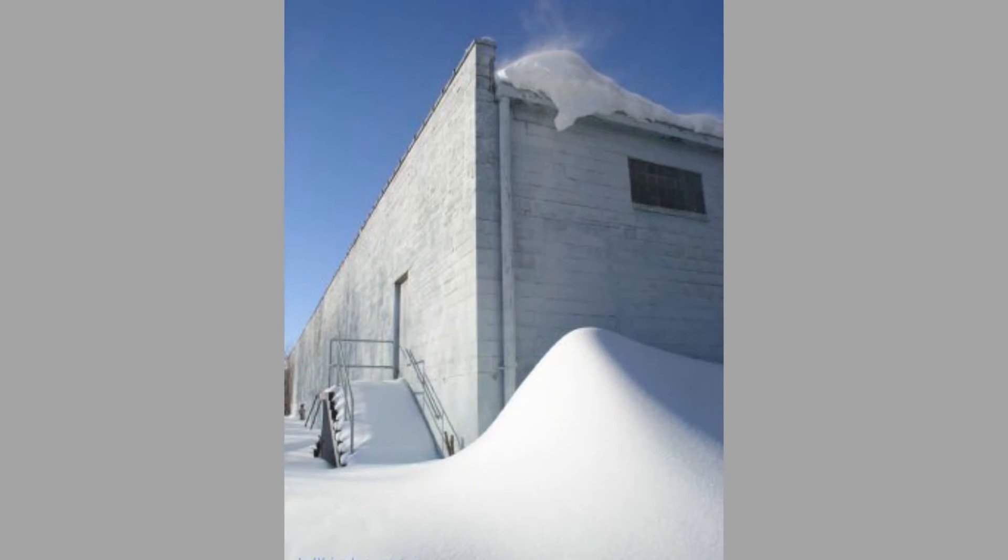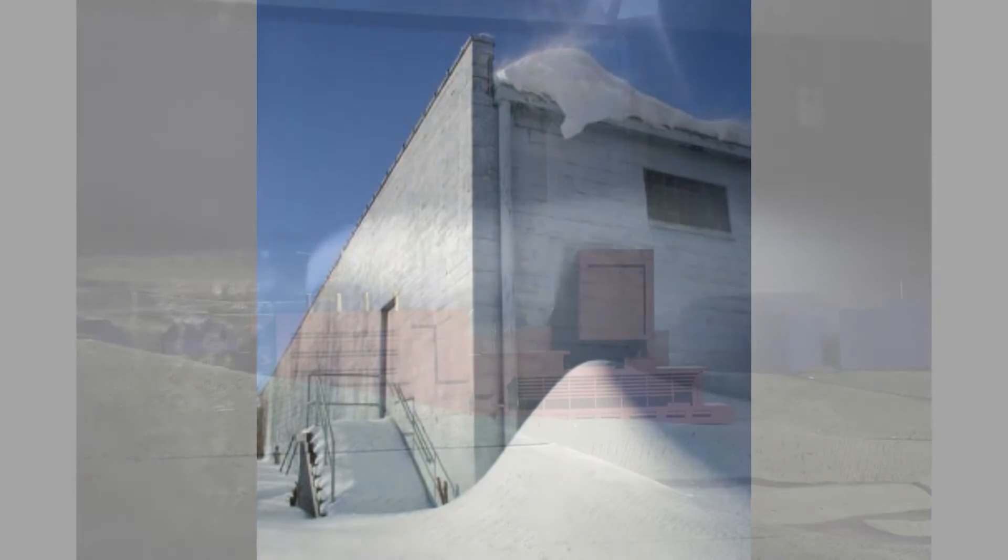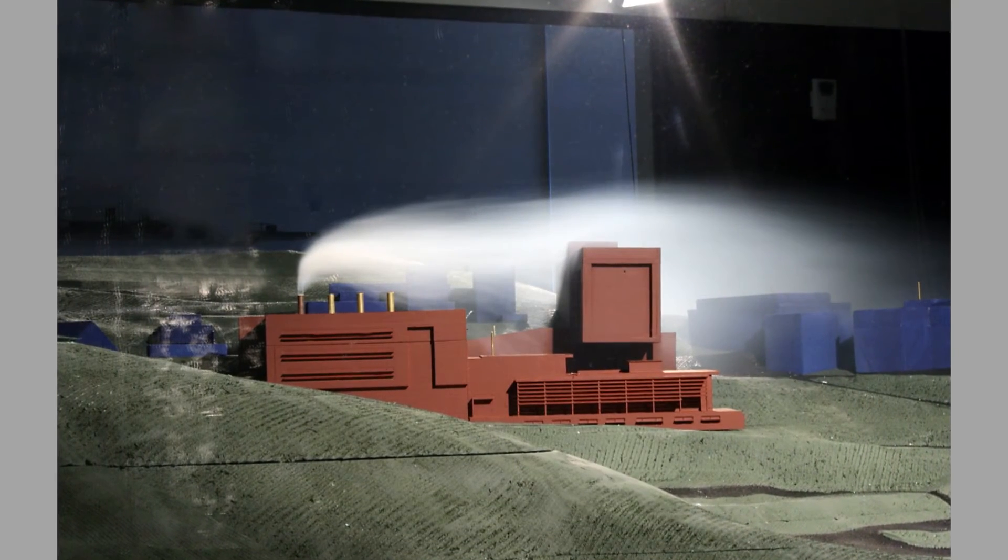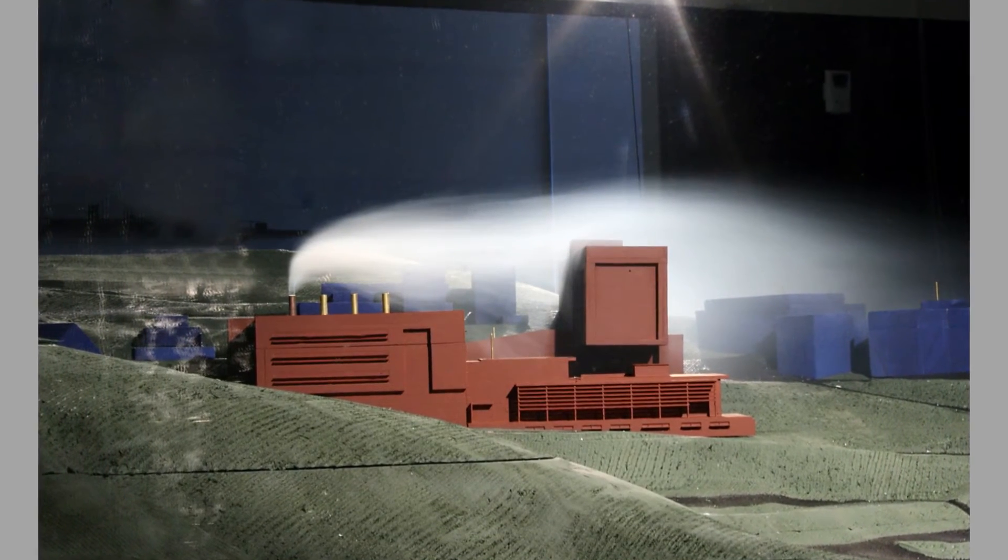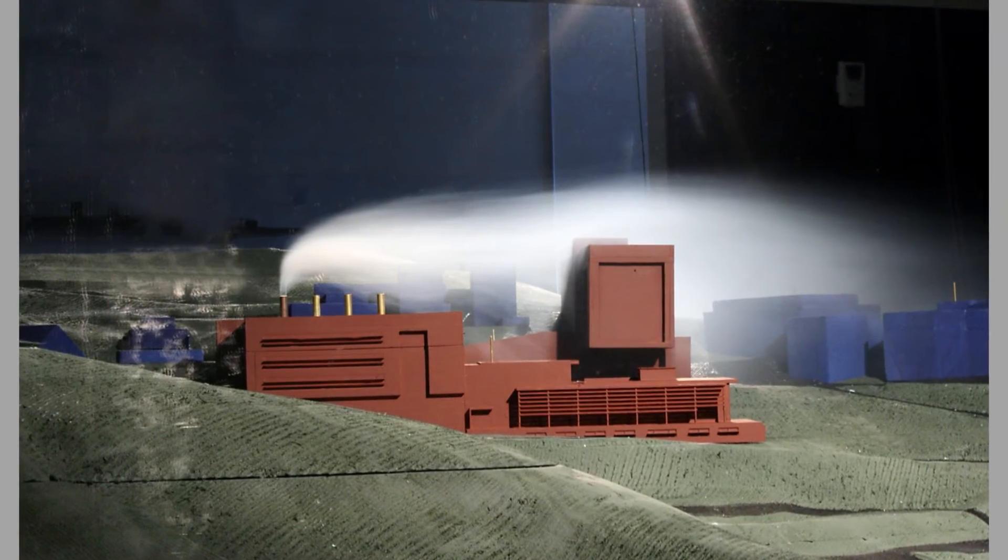So atmospheric boundary layer wind tunnel is the tool that you need to figure out what the wind loads on your structure are going to be. We also use it for a lot of other things: modeling how snow may pause on your building, modeling how exhaust plumes from power plants or research labs, those types of buildings, might come back into your building or your neighbors. You need this kind of tunnel to accurately predict any kind of those interactions with the wind.